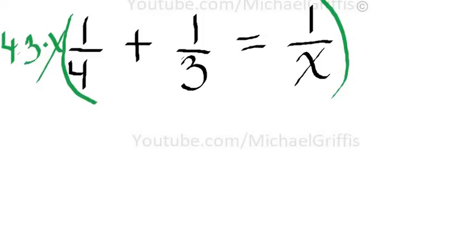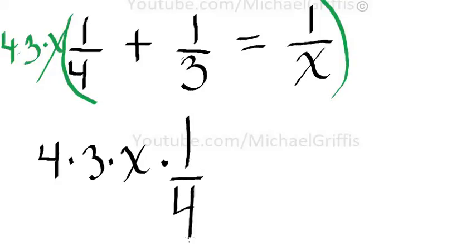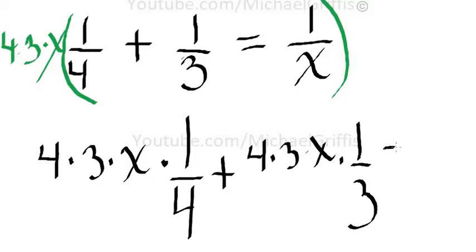So let's now rewrite. So we have four times three times x times one over four, plus four times three times x times one over three, equals four times three times x over one, over x.